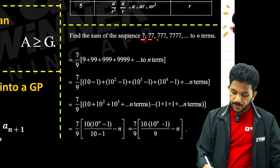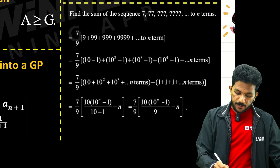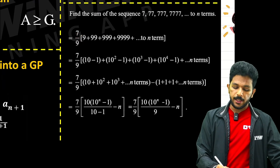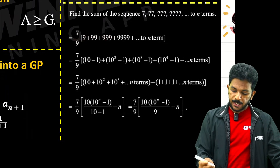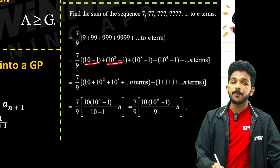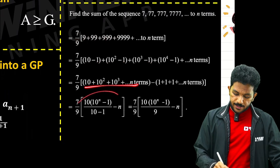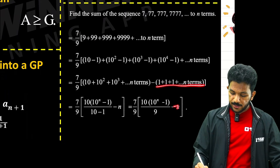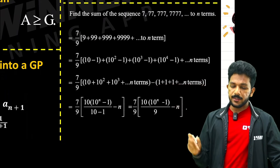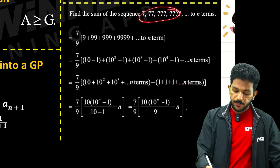For problems like 7 plus 77 plus 777 plus 7777, divide by 9 and multiply by 9. Then use 9 as 10 minus 1, 99 as 100 minus 1 — this becomes a GP that can be simplified. Subtract n times the sign to get the answer.